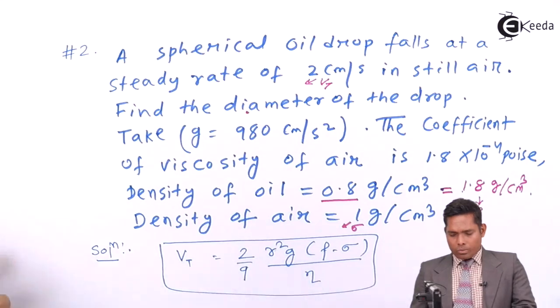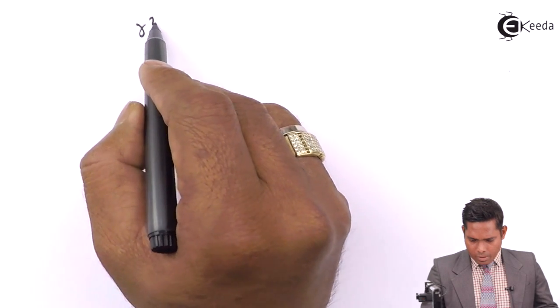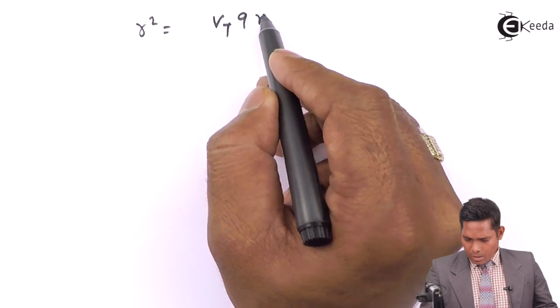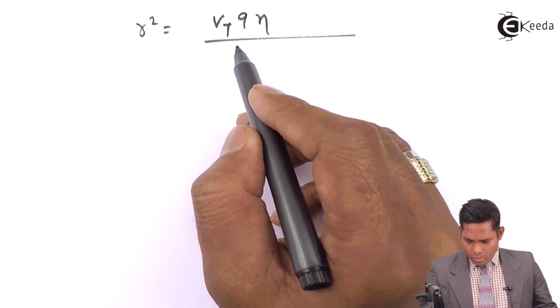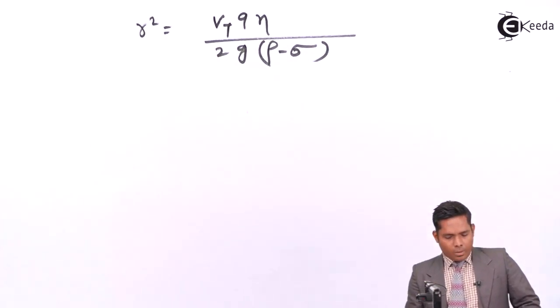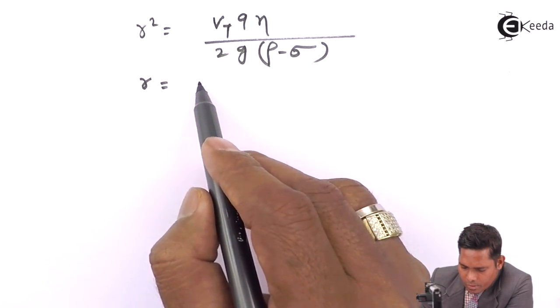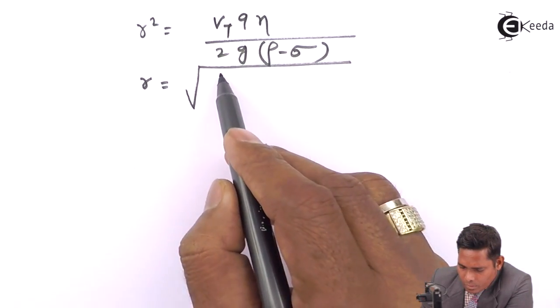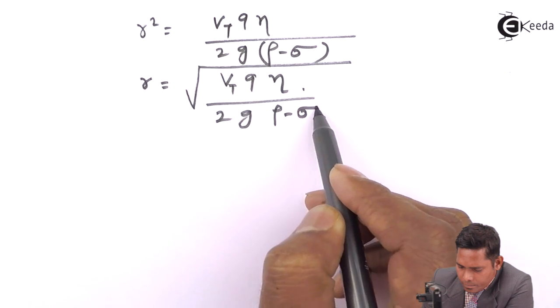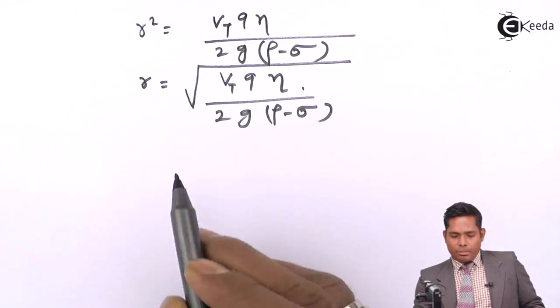From here, Vt 9η equals 2gr²(ρ-σ). Just write this. R squared is Vt 9η divided by 2g(ρ-σ). This is what you will get. And then from here you will get R equals to square root of velocity terminal velocity 9η divided by 2g(ρ-σ).